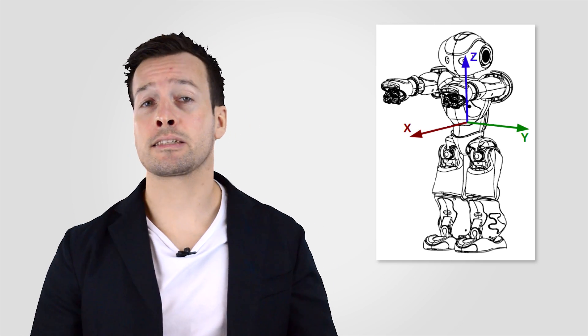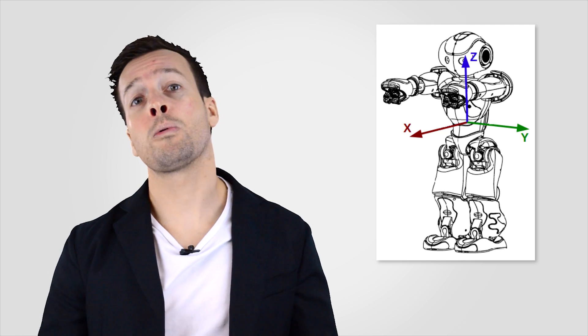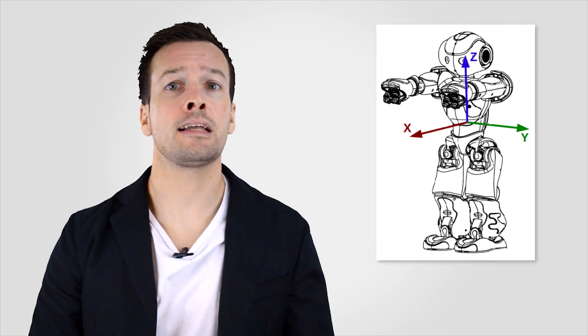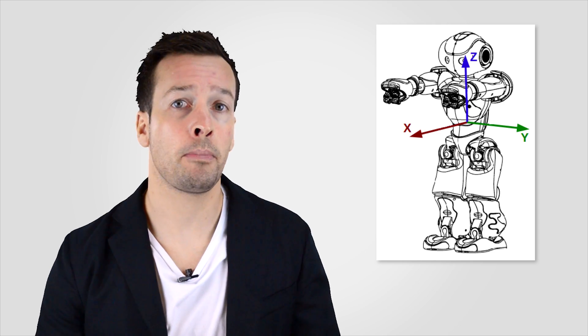As you can see, the X axis of the NAO points forwards and the Y axis points to the left of the robot. The Z axis is perpendicular to both the X and Y axis and points up.